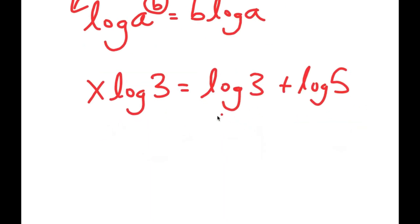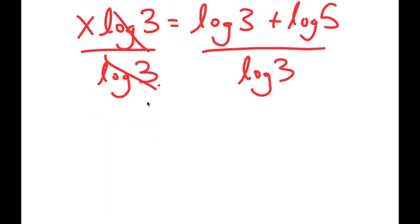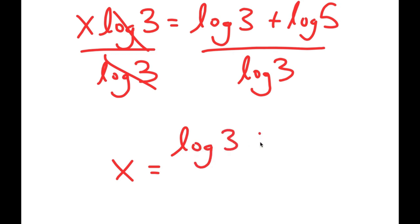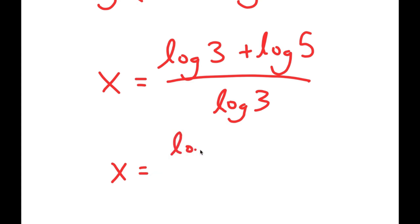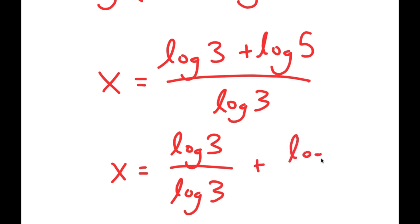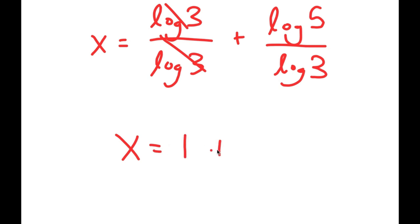From here I'm going to divide both sides by log 3. The left-hand side cancels out, and I get x is equal to (log 3 + log 5) over log 3. I can rewrite this as log 3 over log 3 plus log 5 over log 3. Log 3 over log 3 cancels, so I get x is equal to 1 plus log 5 over log 3.